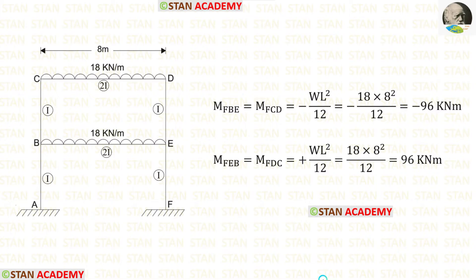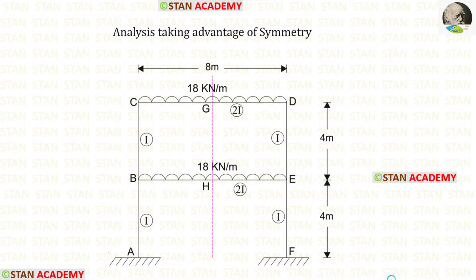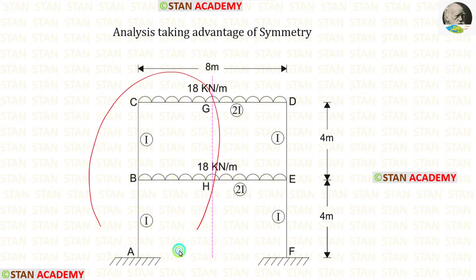Now let us find the fixed-end moments. Only in the beams we have loads; in the columns we don't have loads, so the fixed-end moments for the columns are 0. For the beams BE and CD, we can find the fixed-end moments using these formulas. This frame is symmetrical — the line of symmetry passes through the center of the beams. In this analysis, we can take either the left or right side. I am going to take the left side and do the analysis.